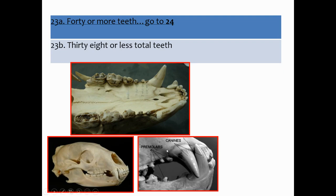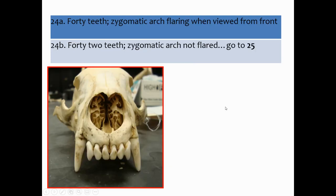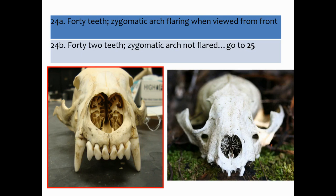With 40 or more teeth, couplet 24 asks: zygomatic arch flaring when viewed from the front — 40 teeth — or zygomatic arch not flared — 42 teeth, go to 25. The difference between a flared and unflared zygomatic arch is subtle. This skull shows an unflared zygomatic arch, so it's 42 teeth, zygomatic arch not flared, and we go to 25.